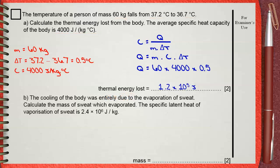Question B. The cooling of the body was entirely due to the evaporation of sweat. Calculate the mass of sweat which evaporated. The specific latent heat of vaporization of sweat is 2.4 times 10 power 6 joules per kilogram.